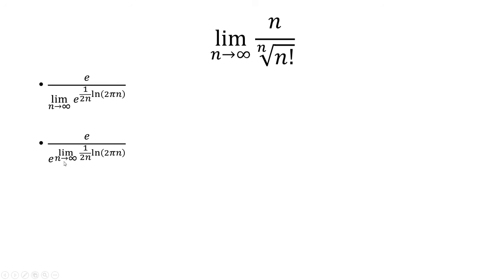And then now if I let n go to infinity, ln of 2 pi n goes to infinity. So does 2 n. I get infinity over infinity. I use L'Hôpital's rule. Take the derivative of the natural log and 2 n. And I get 1 over 2 n inside the limit. And we know that goes to 0.